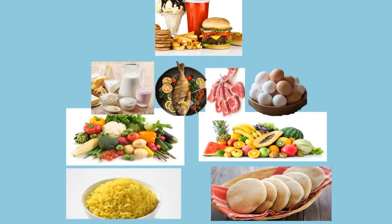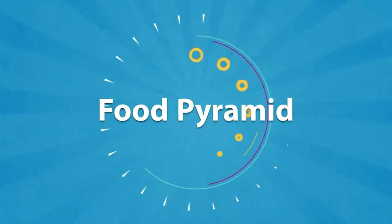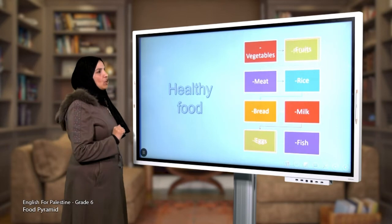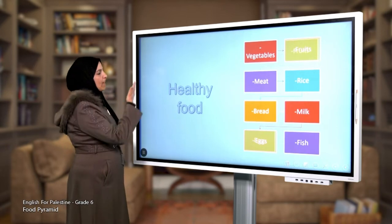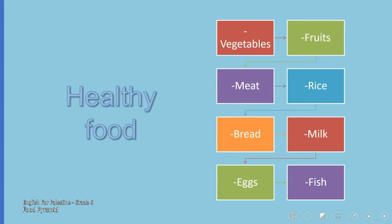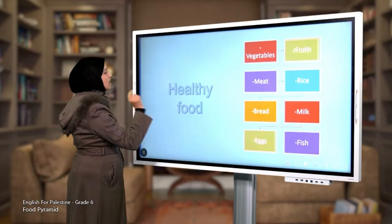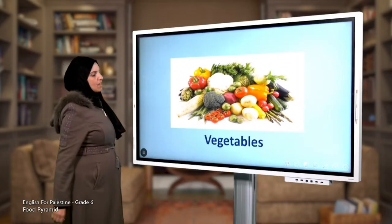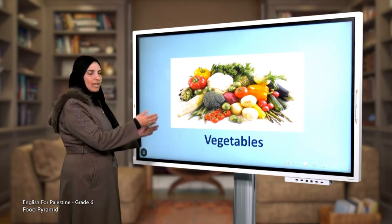Such as fries, fizzy drinks, and sweets. Now let us have a look at the healthy food such as vegetables, fruits, meat, rice, bread, milk, eggs, and fish. Here are their pictures. This is the vegetables group.